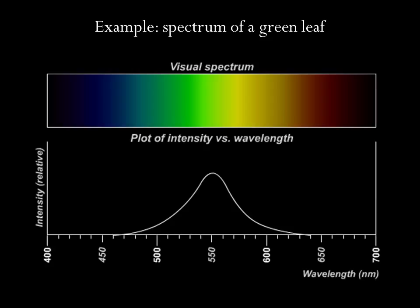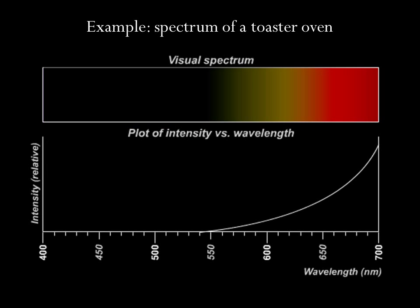Here is an example spectrum. Think about the green leaves on that rose. This is what the spectrum would look like. The intensity peaks in the green from the green reflected light. And here is the spectrum of a toaster oven. We have the intensity peaking in the red and stretching into the infrared or heat, but very little anywhere else.